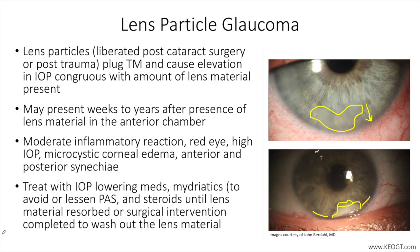Sending aqueous humor taps for analysis to identify polymorphonuclear cells could be done if there is confusion between lens particle glaucoma and phacoantigenic glaucoma, although the differences are academic since the treatment is essentially the same. Neovascular glaucoma and uveitic glaucoma may in part mimic the disease process of lens particle glaucoma, but each can be ruled out with proper history and examination.